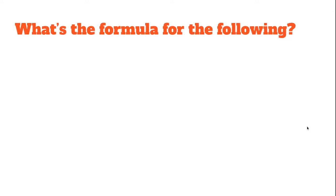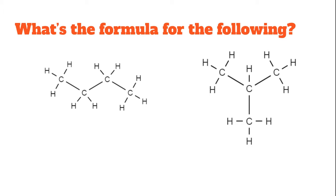So what is the formula for the following? Take a look at these structural formulas. Here is one compound - this is an alkane with all single bonds. And here's another alkane with all single bonds. What's the difference between the two? Well, the difference is the length of the carbon chain.